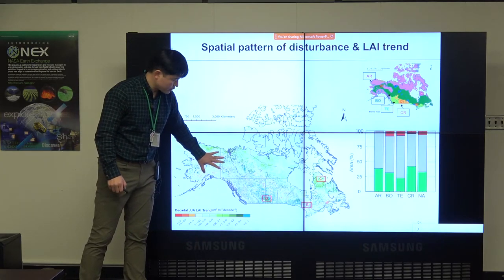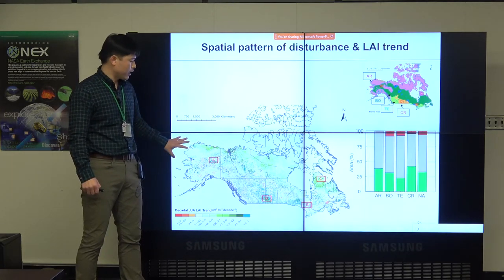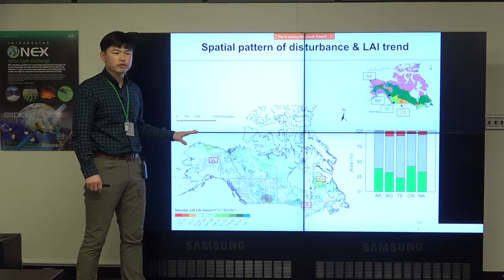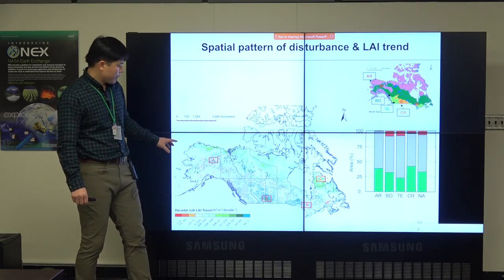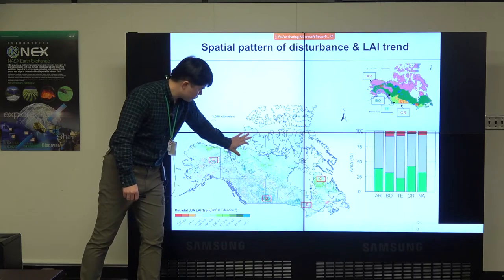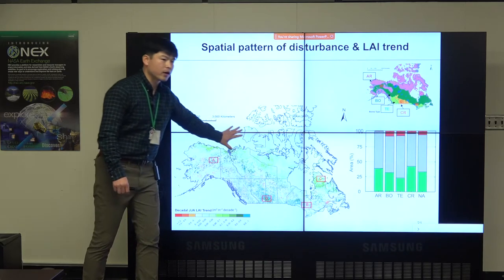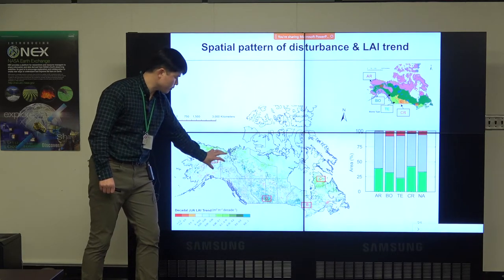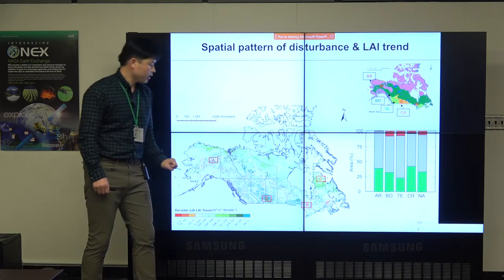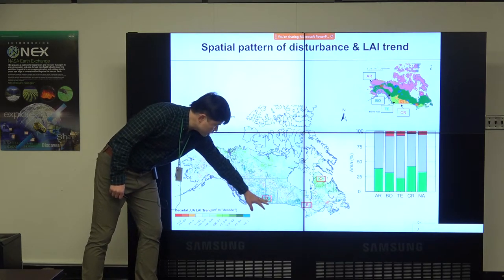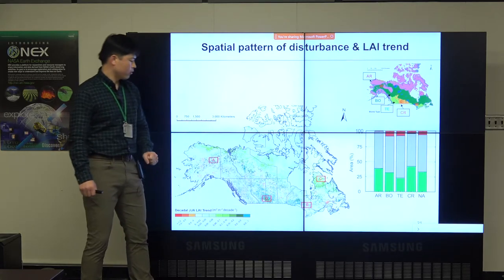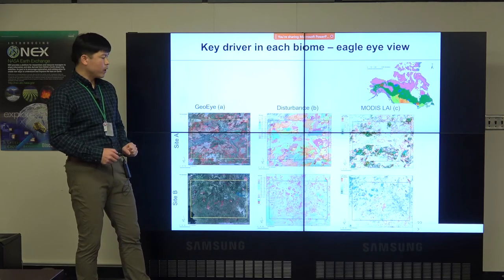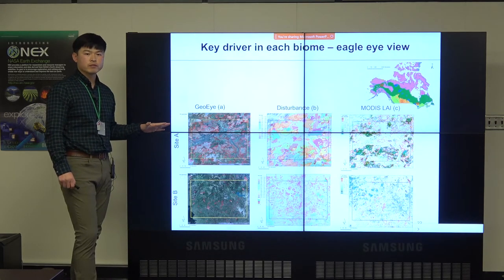Looking at how vegetation has changed over the last two decades with much higher resolution and better quality than NDVI, we see a widespread greening pattern from the Arctic region, but a more patchy greening and browning pattern in the boreal. There are also strong signals of vegetation changes in certain areas. The 500-meter MODIS data lets us see what is really happening at the surface.